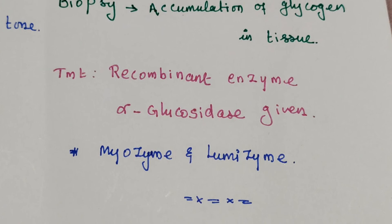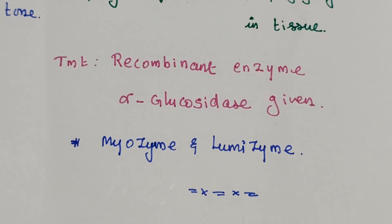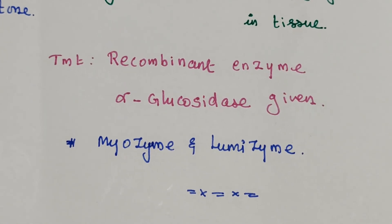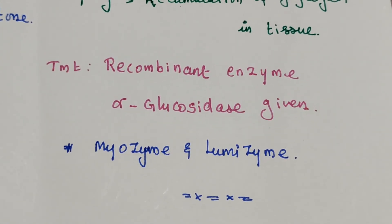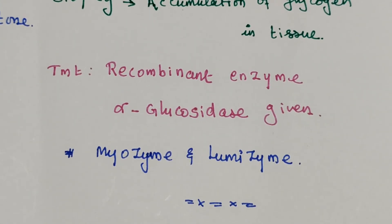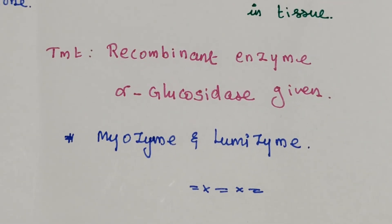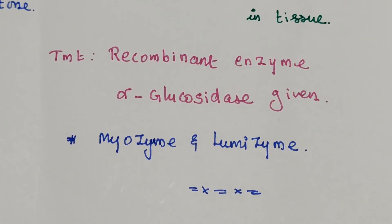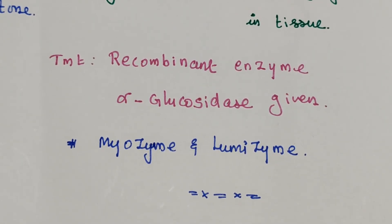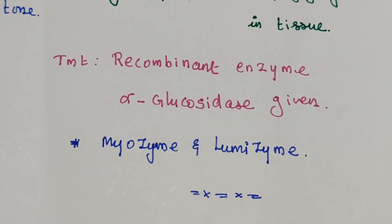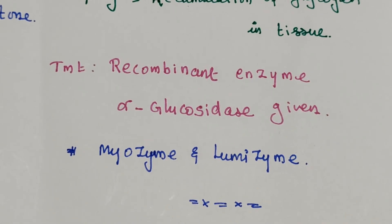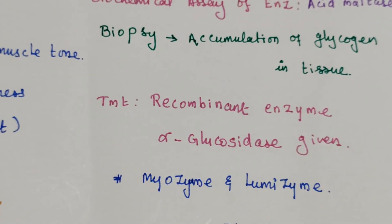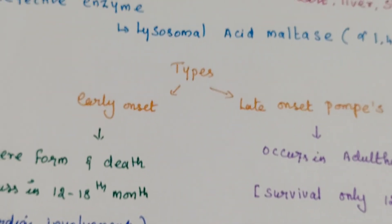Treatment involves recombinant enzyme therapy, that is enzyme replacement therapy. Recombinant alpha-glucosidase is given. The medications Myozyme and Lumizyme can be given in the treatment of Pompe's disease.